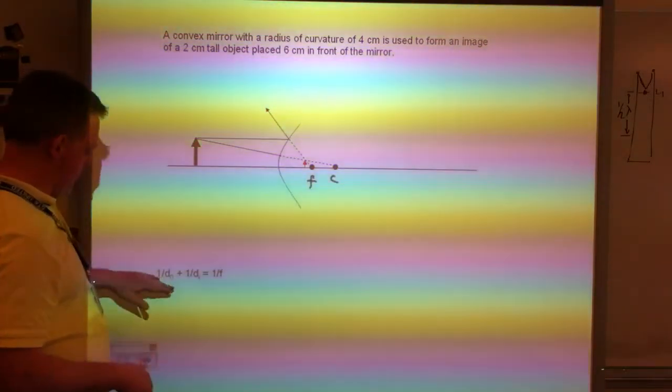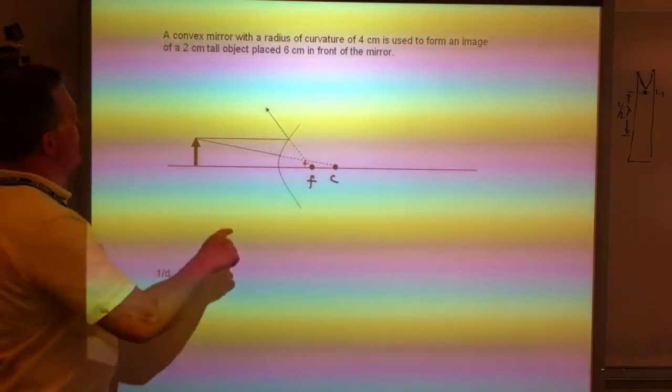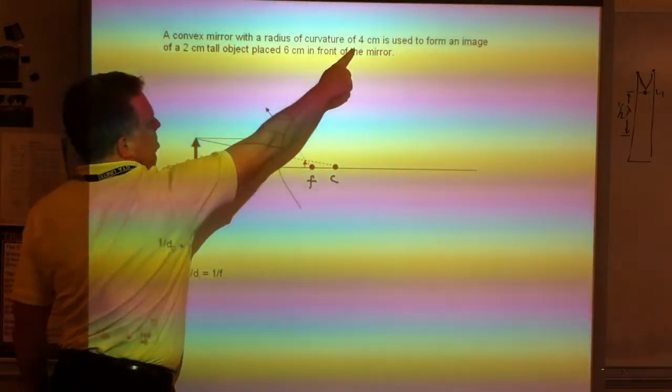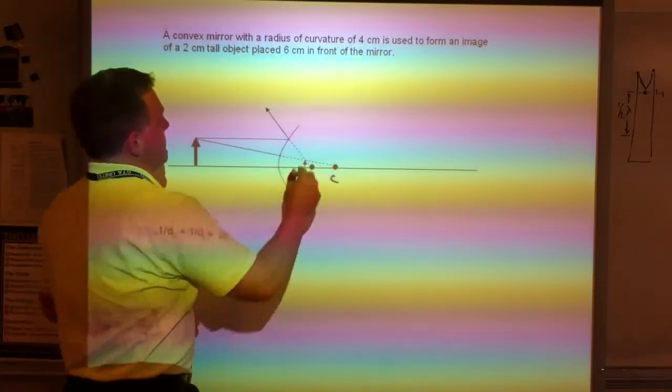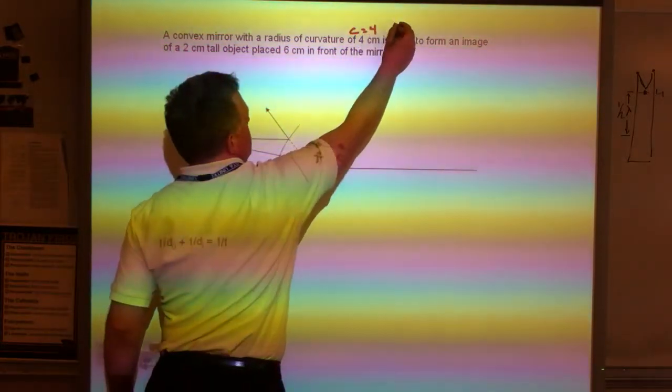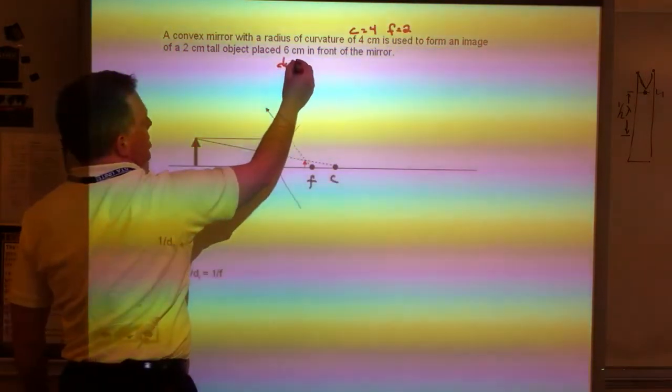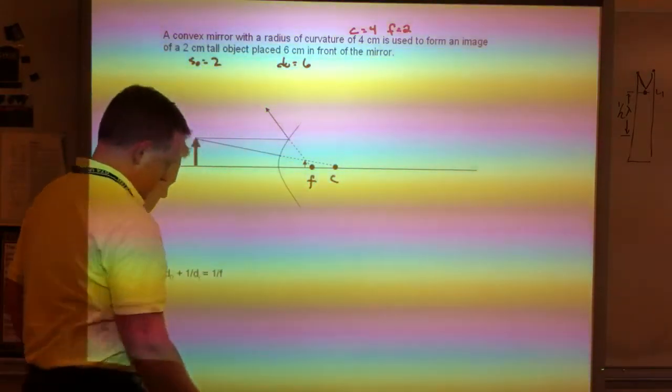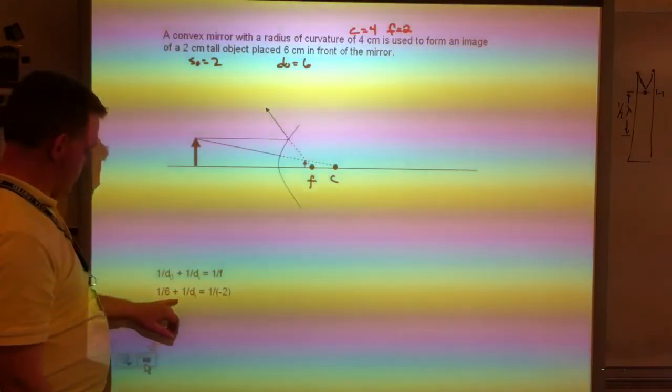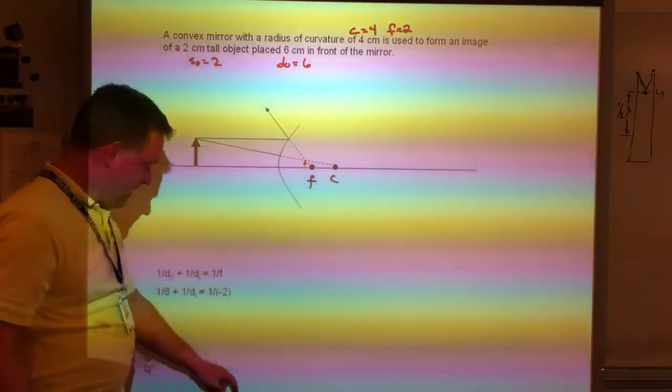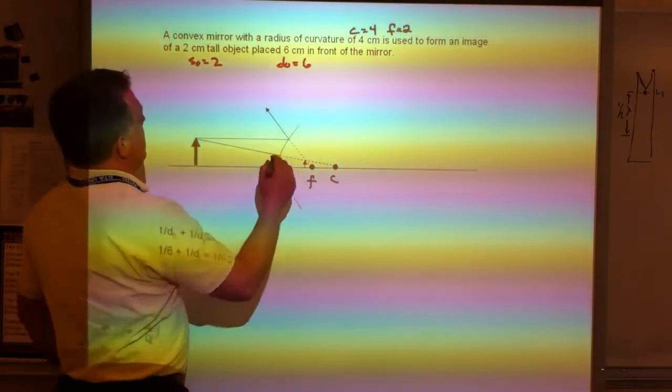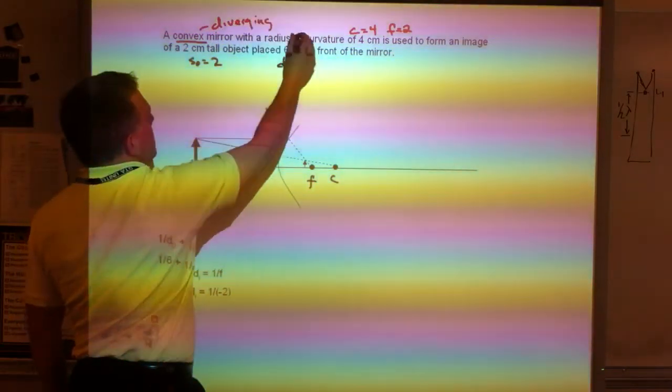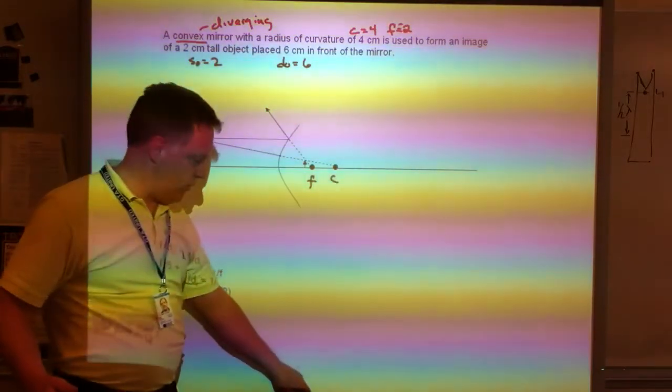For the math, we're going to use the same equation: 1/DO + 1/DI = 1/F. DO is 6, because it's 6 centimeters in front of the mirror. And the radius of curvature is 4. That means the center is at 4, so the focus is going to be at 2. This told me that DO is 6 and SO is 2. So as I plug into the equation, I'm going to get 1/6 + 1/DI = 1 over... it's negative 1/2, because if it is a convex mirror, that means it's diverging, which means our focus is negative. That's something you have to be aware of when you're doing these.